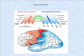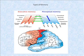Overall, the different types of memory combine to form an executive memory, which can carry out functions as influenced by perceptual memory, which is largely influenced by the brain regions that receive sensory information. The many different types of memory reveal the complexity of the brain in processing information about the world around us.